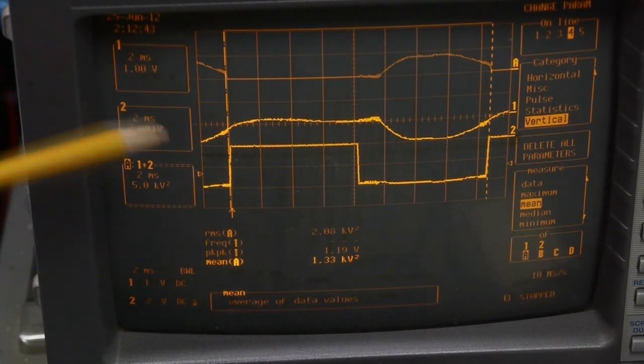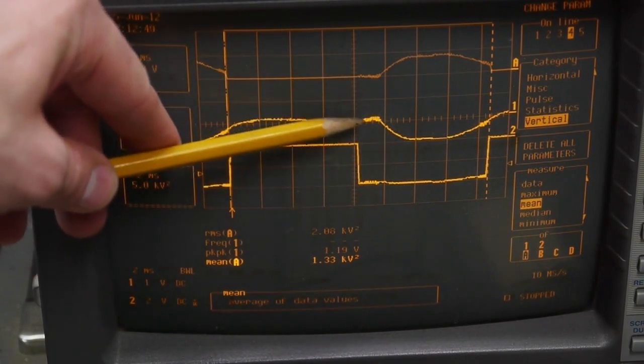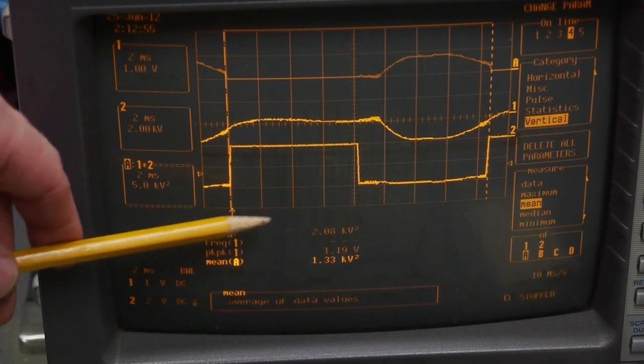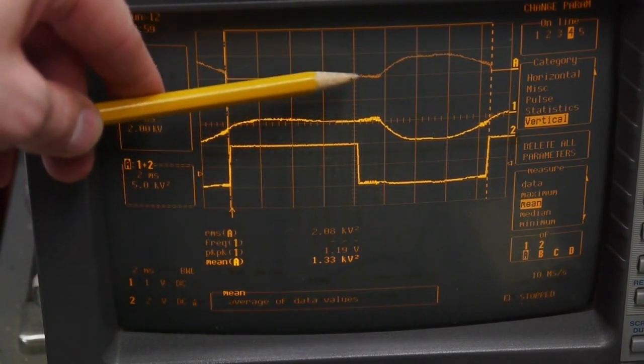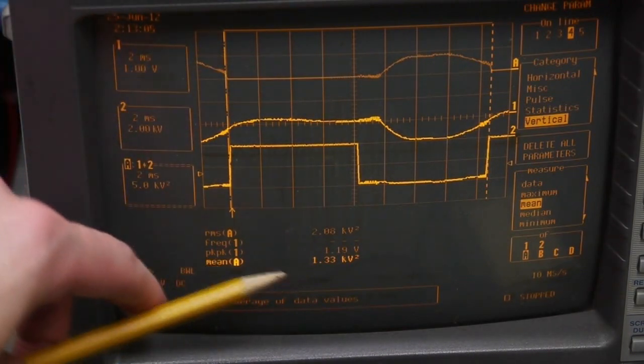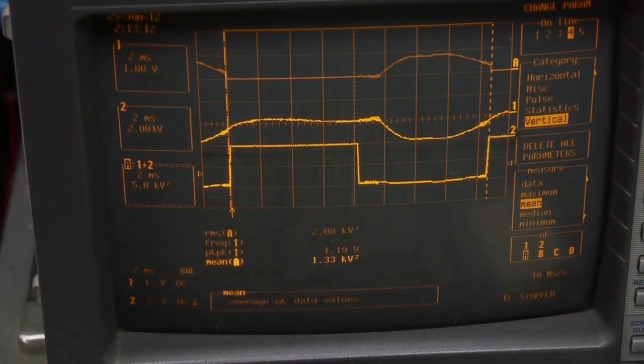I changed the scale on the current probe so that now we've got one volt per amp, or one division per amp, on the current trace, which is 1. The voltage trace is still 2, and it's 2 kilovolts per division. And A is the product of the two. So A is power. And I used the scope's measurement feature to get the mean value for power across one full cycle. So it's gated on these two bars here. And lo and behold, 1.33 kilowatts. So that's actually about right. Microwave ovens are 1,200 watts in, and the magnetron's probably outputting 700 to 800 watts of microwave power. But yeah, 1,200, 1,300 watts in, that's pretty reasonable.